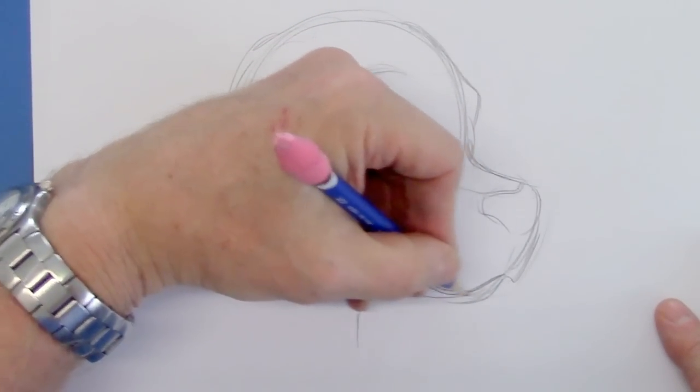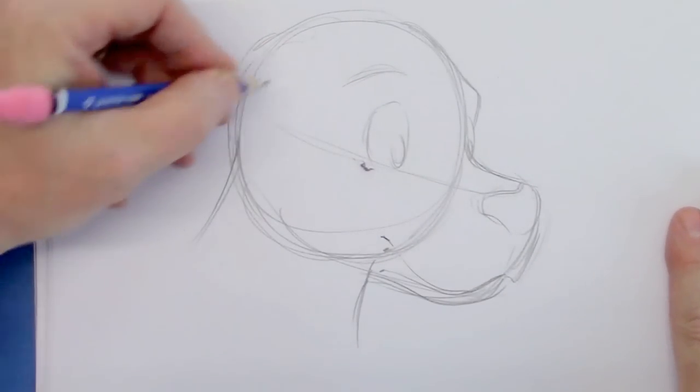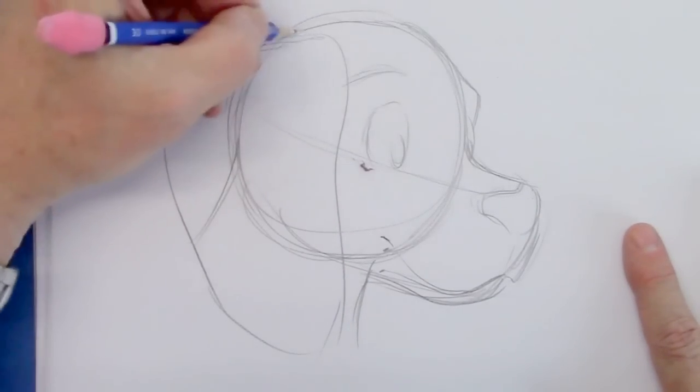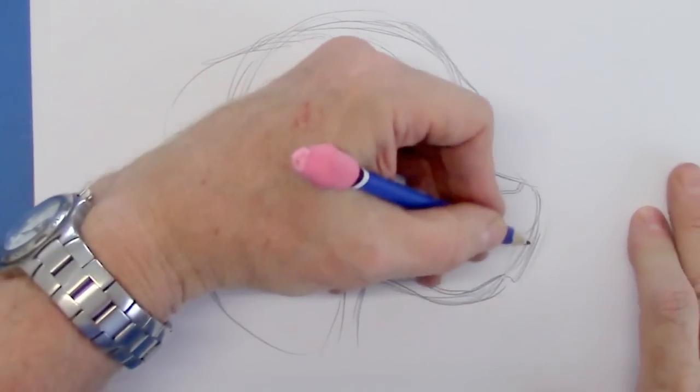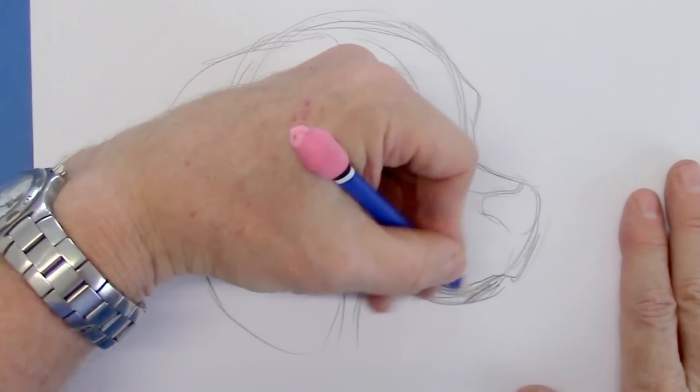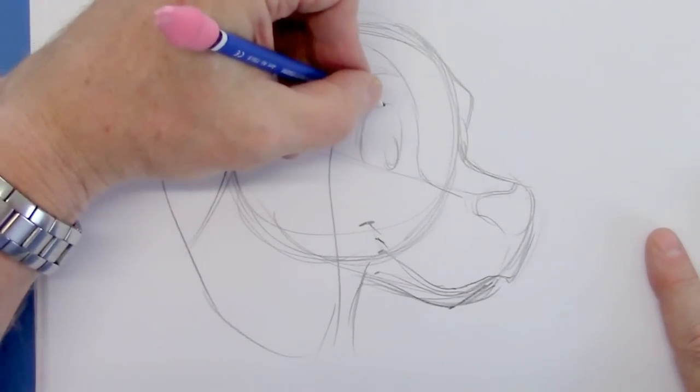So let's give him a little bit of a chin here. Like that. And we'll bring those big ears forward. And a little stripe for the nose. Now that we have that, let's darken it in and see what happens.